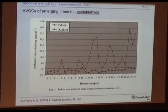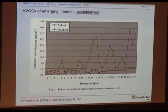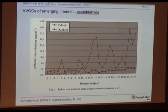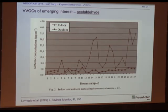My private top VVOC is acetaldehyde. It is somewhat similar to formaldehyde, and there are very many sources of acetaldehyde by reaction. A nice study from Italy measured about 30 houses — outdoor air and indoor air — showing concentrations up to 35 micrograms per cubic meter. This is not extremely high, but I think the amounts of acetaldehyde in indoor air are slowly increasing. There are many more papers on acetaldehyde; I just picked one here.